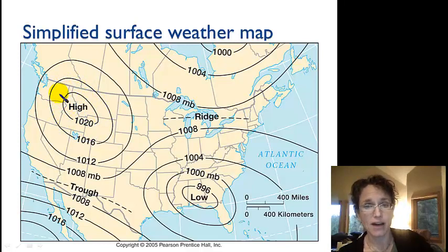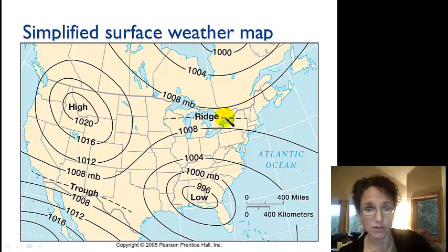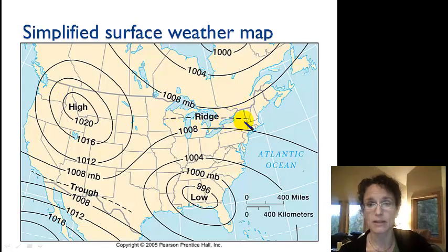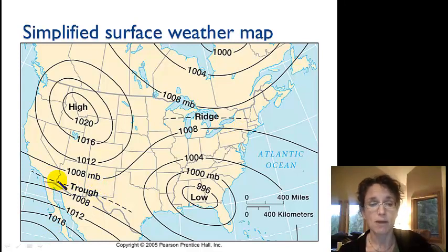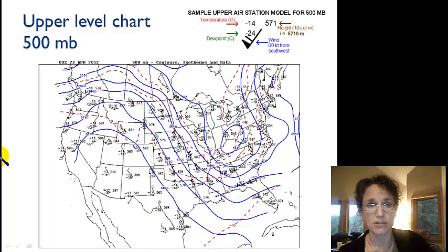Where we have high pressure, we expect fair weather. In the high pressure ridge, probably more fair weather as well. And in this low pressure trough, probably more cloudy precipitation.